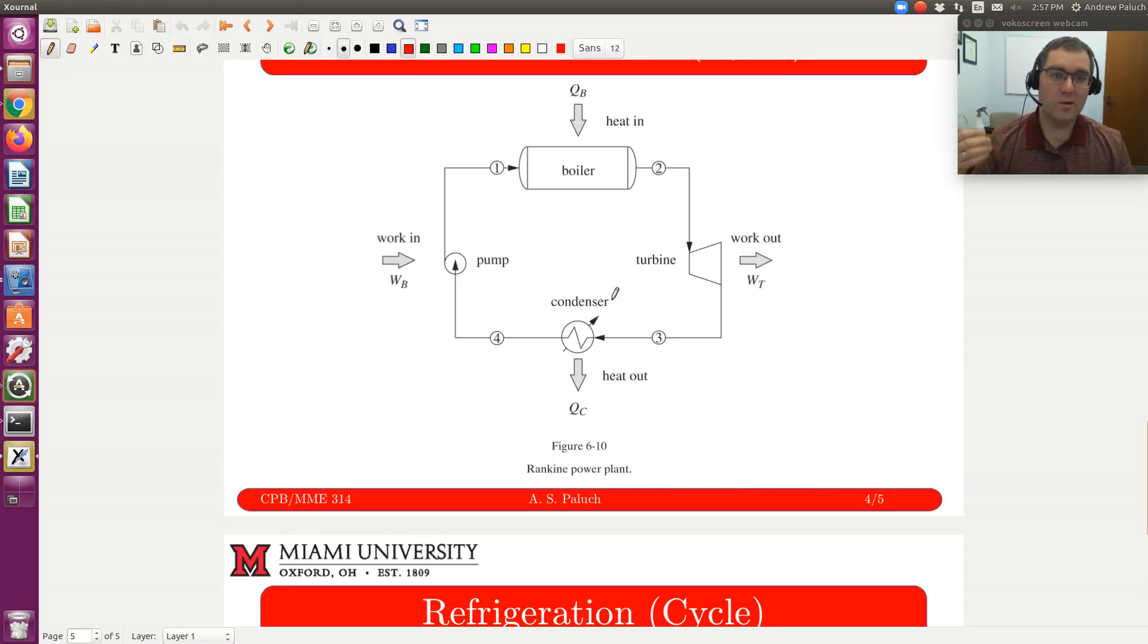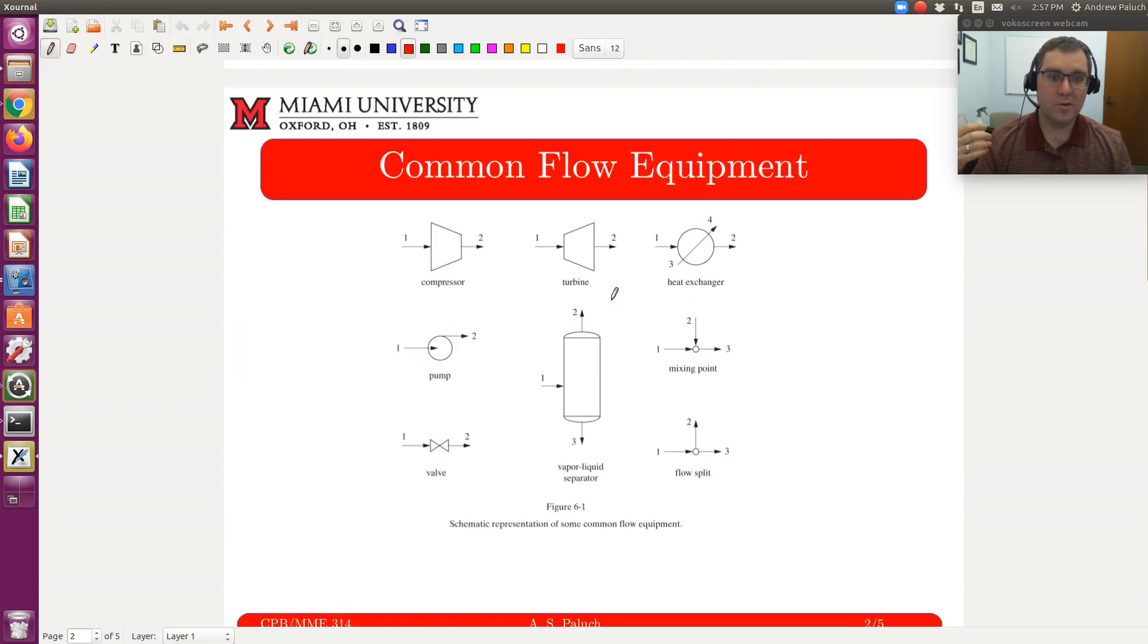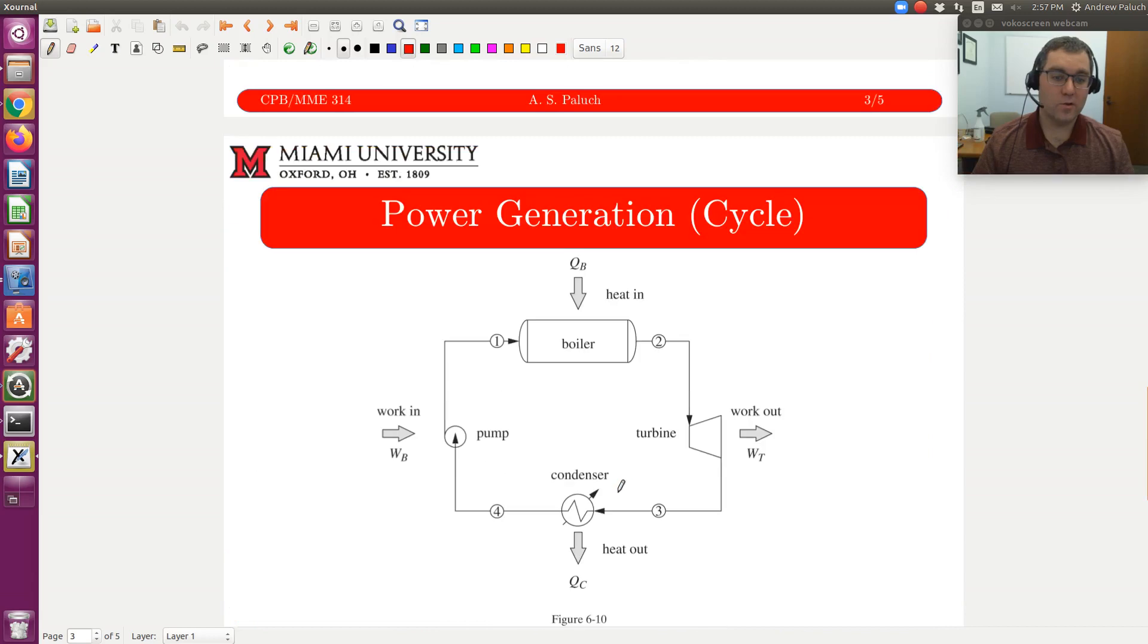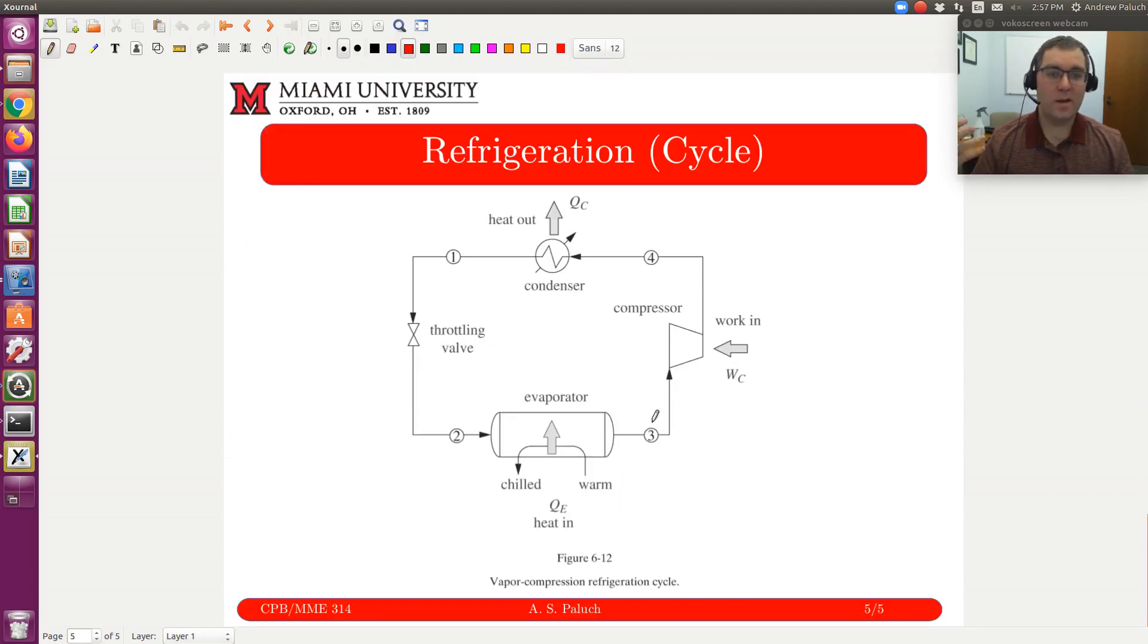After we've discussed the application of our first and second law balance on each of these individual units, our strategy is essentially going to be to take our process one piece at a time and use that to characterize each of our streams in our cycle. Hopefully that gives you a very basic overview of what we're going to tackle in Chapter 6.